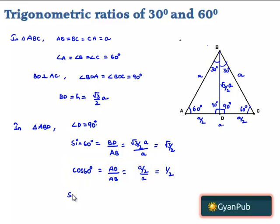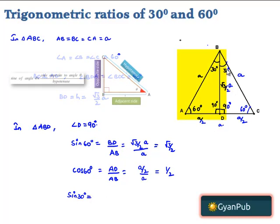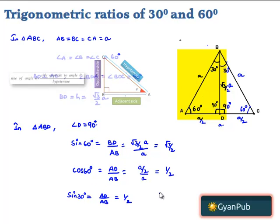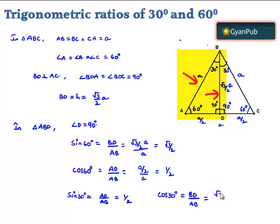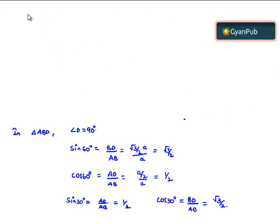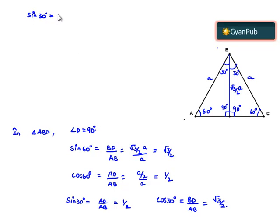Now, let us consider sin 30 degrees, that is equal to the opposite side AD divided by hypotenuse AB, which is nothing but cos 60, that is half. And cos 30 degrees is nothing but root 3 by 2. Therefore, here we got the values as: sin 30 degrees is equal to 1 by 2, sin 60 degrees is equal to root 3 by 2, cos 30 degrees is equal to root 3 by 2, and cos 60 degrees is equal to 1 by 2.